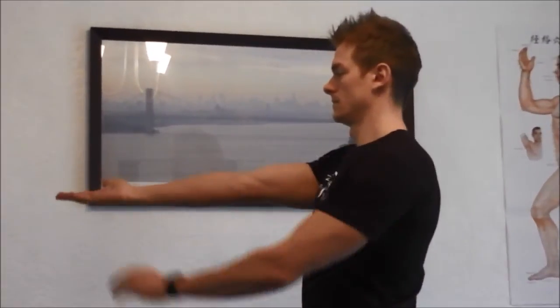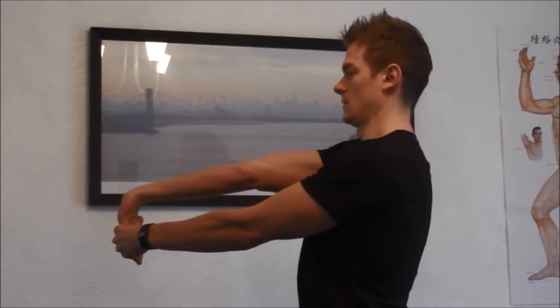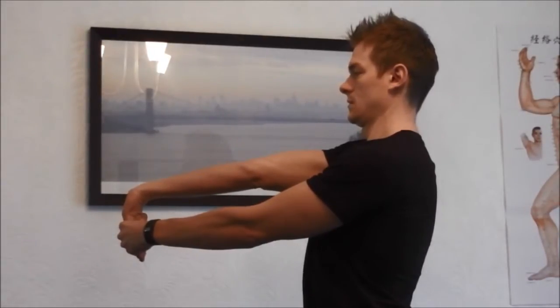You need to stretch the wrist and forearm. Extension: With your elbow straight and your hand palm facing up, extend your wrist so that your fingers point towards the floor. Use your opposite hand to apply extra stretch. Hold for 30 seconds and repeat 3 times a day.